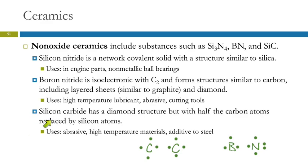Then there's silicon carbide, which has the same lattice structure as diamond, but half of the carbon atoms have been replaced with silicon atoms. It's used as an additive to steel, and again as an abrasive and high-temperature material.